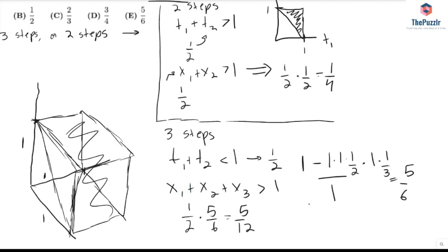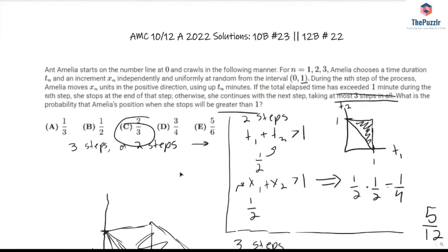So our final answer is going to be 5 over 12 plus one-fourth, which is 2 over 3, which would be choice C. And we're done.